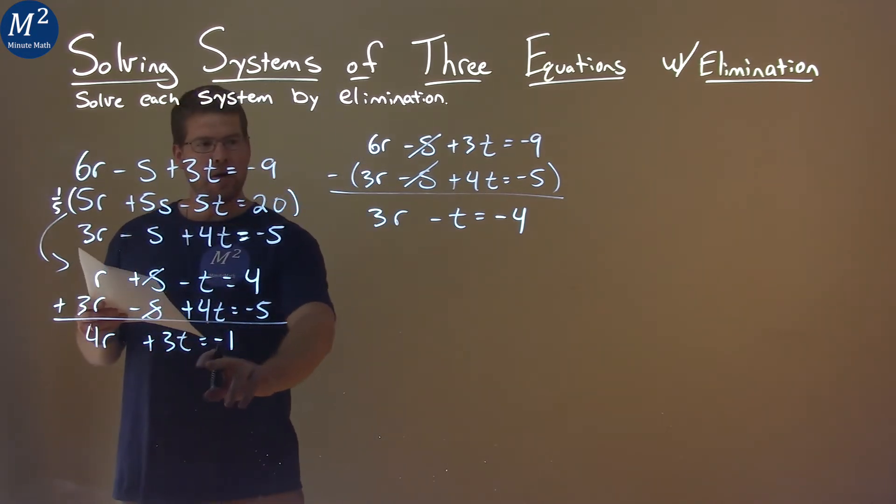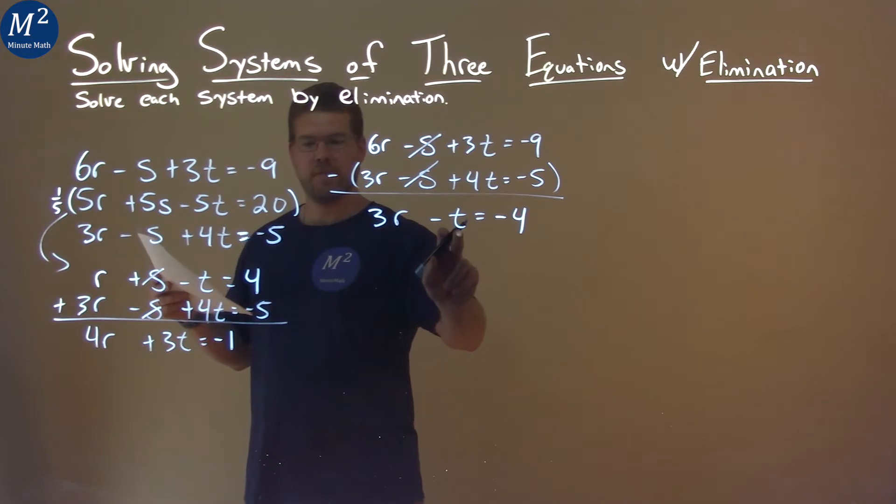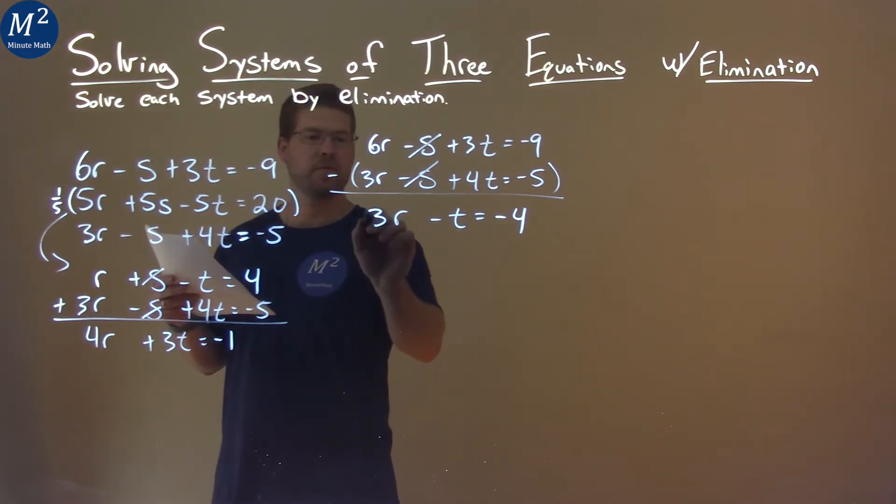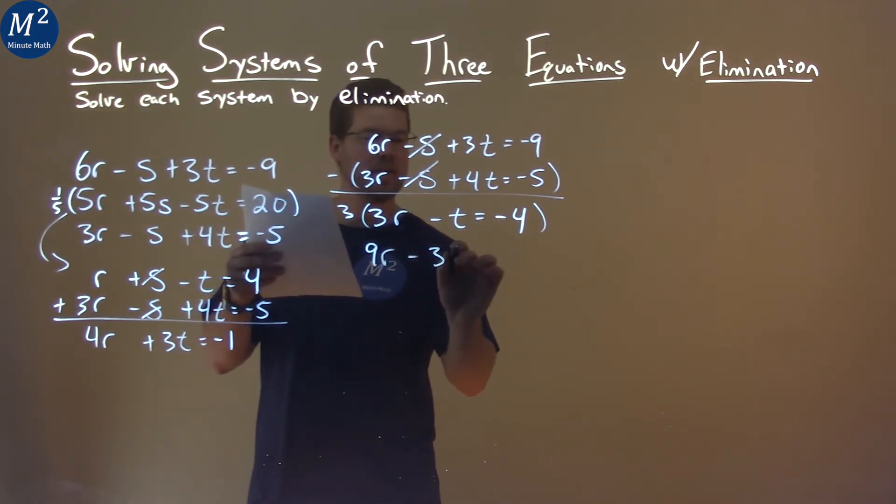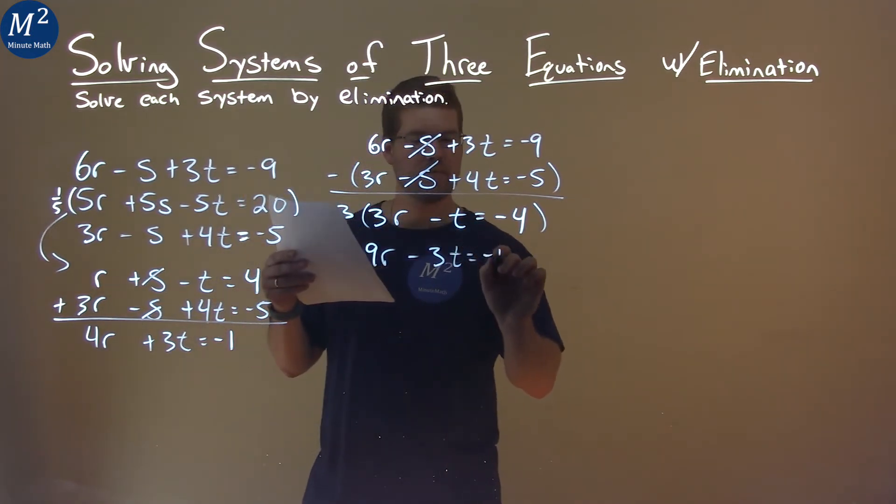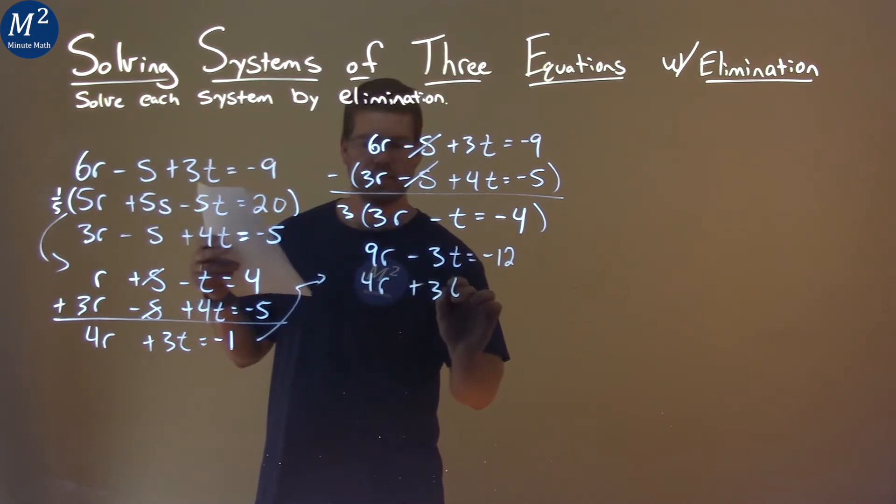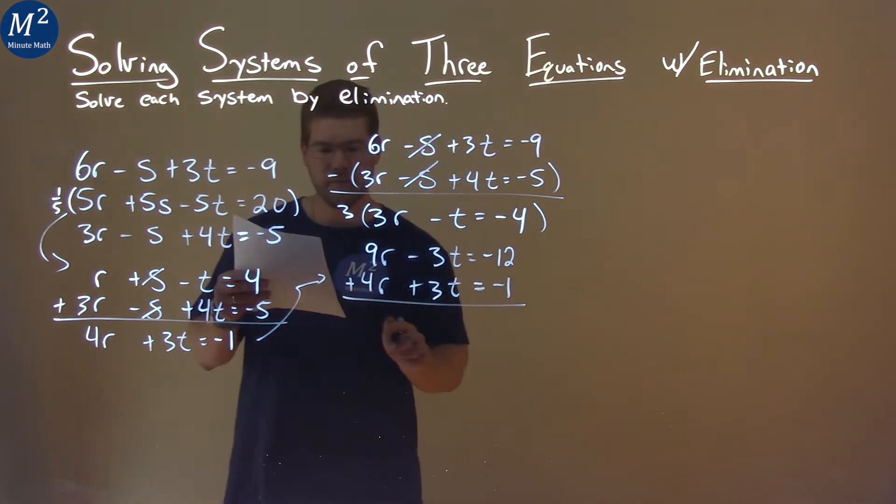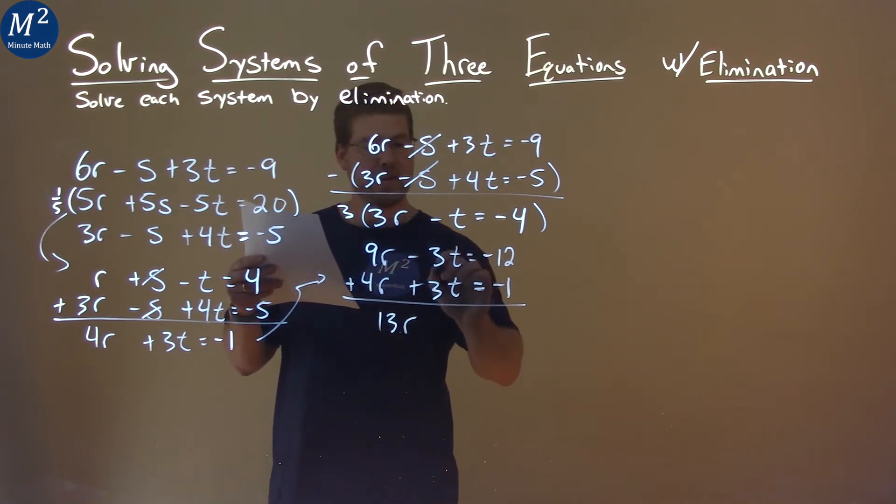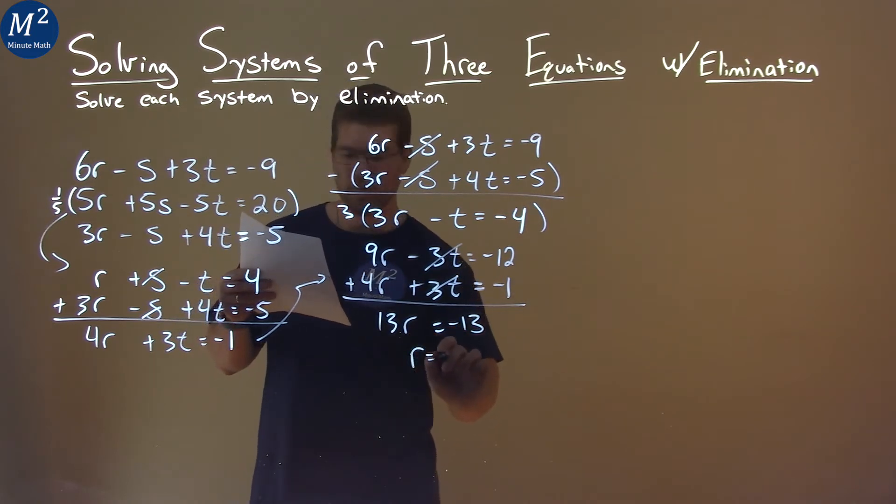How can I maybe combine these two to eliminate a variable? This equation here, if I multiply it by 3, I have negative 3t and positive 3t here and it would cancel. So multiply it by 3, I get 9r minus 3t equals negative 12. Bring this equation over here. We have 4r plus 3t equals negative 1. Now if we add these two equations, we have 9r plus 4r, that's 13r. The t's cancel. And that equals negative 12 plus negative 1, negative 13. Divide both sides by 13, and r equals negative 1.